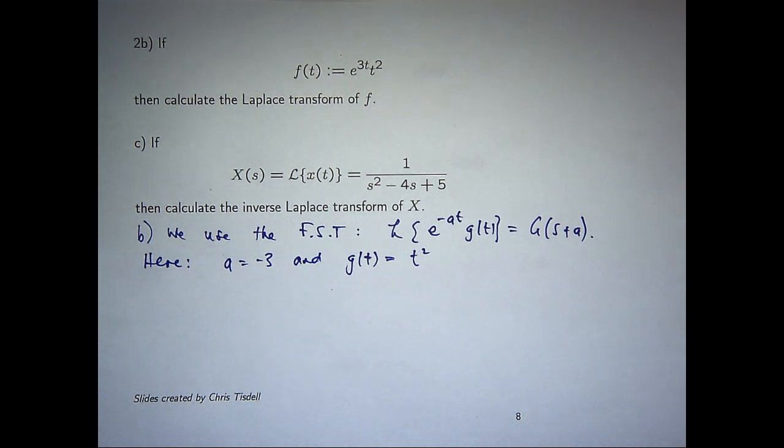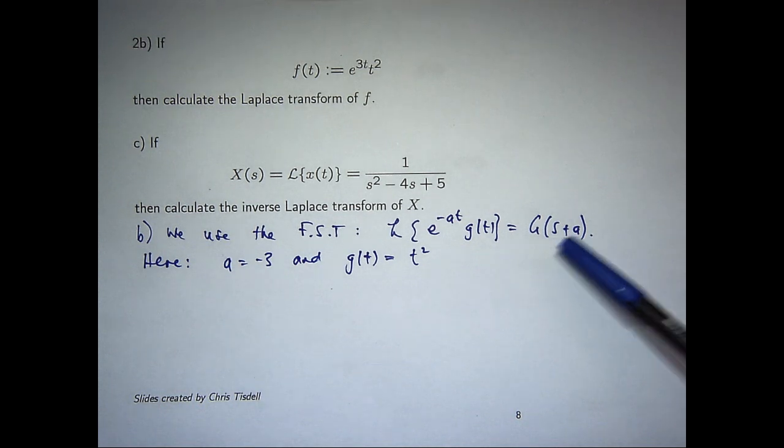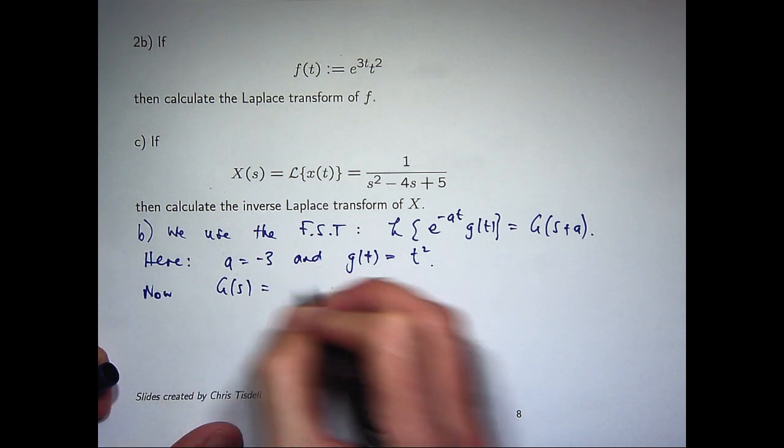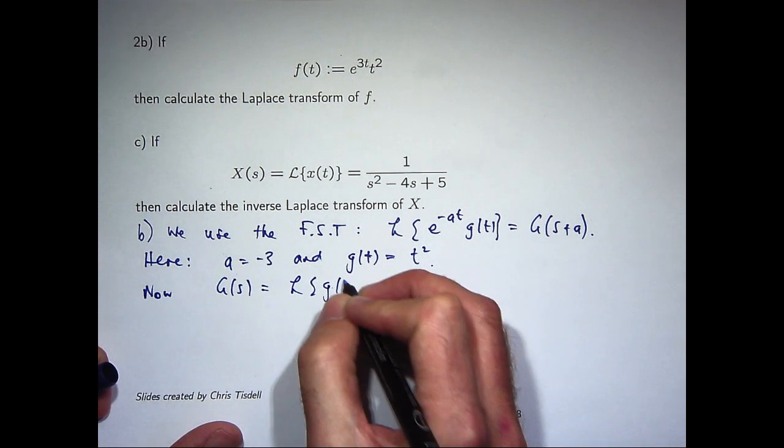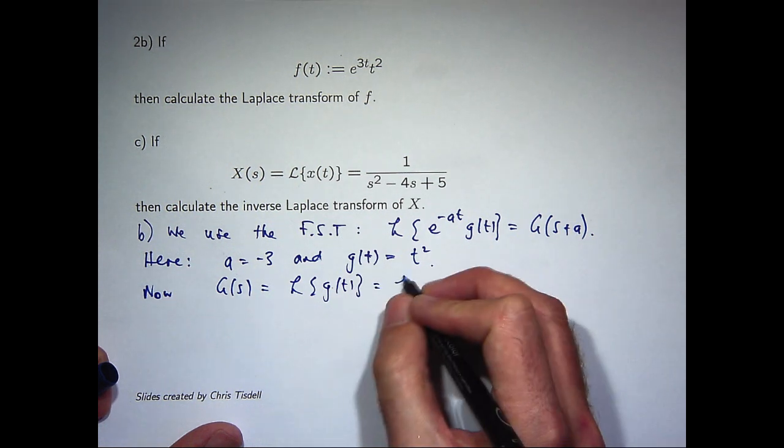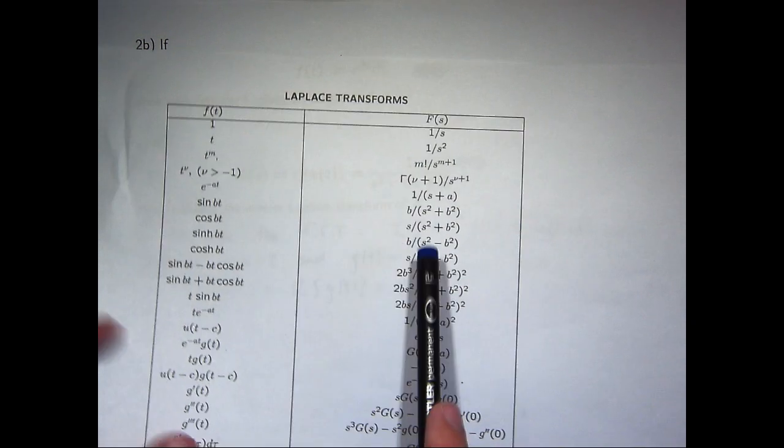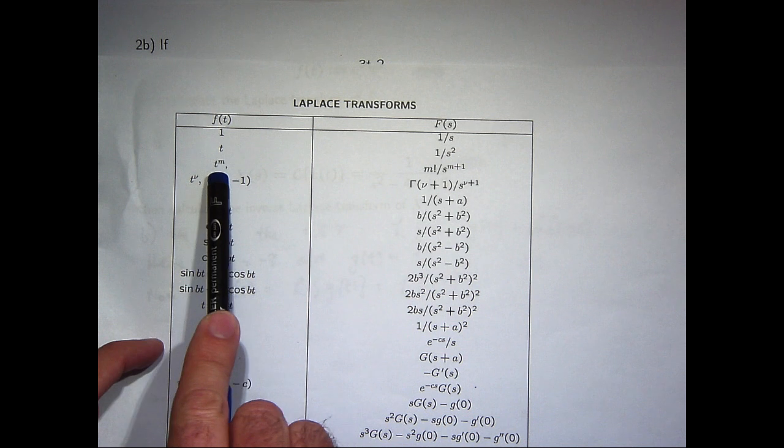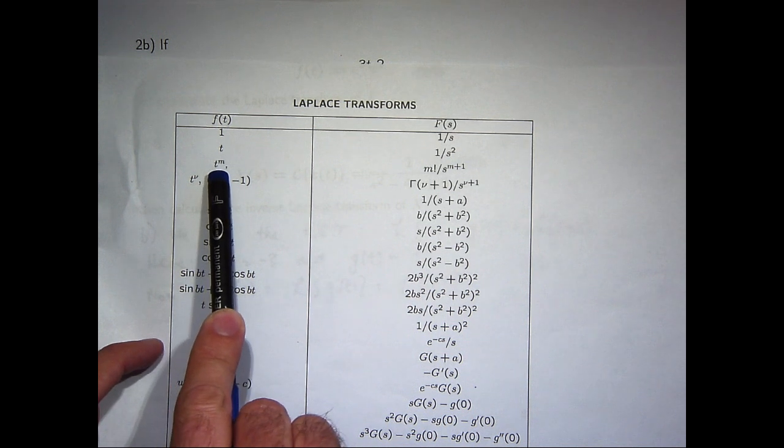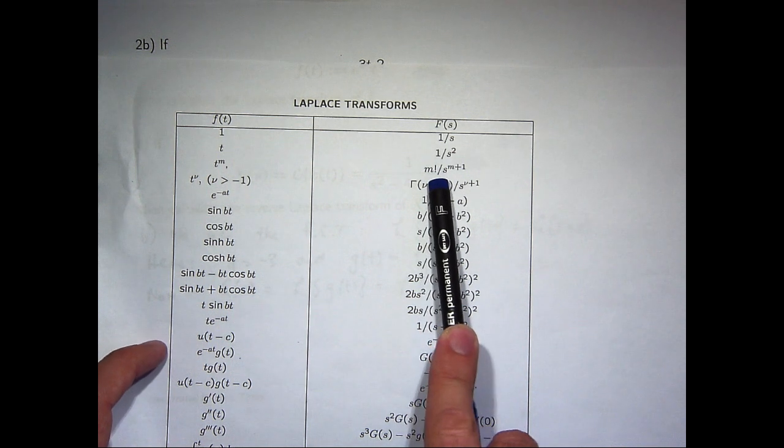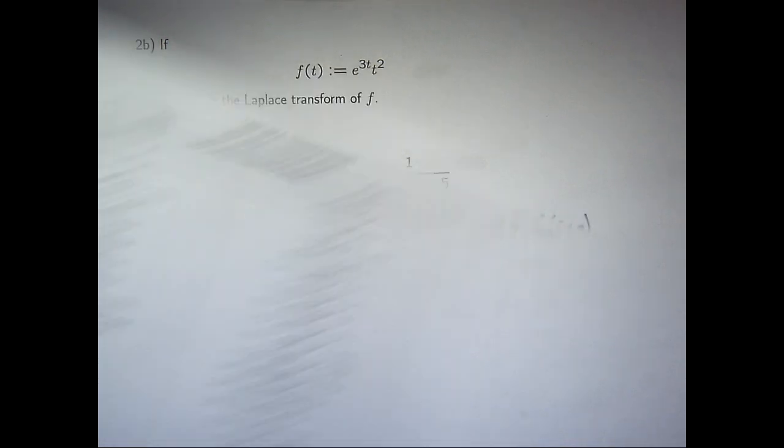So, firstly, before we form this, let's calculate big G of s. This is just the Laplace transform of little g, the Laplace transform of t squared. So, let's see if we can find the Laplace transform of t squared here. Well, if we look down here with m equals 2, we just go across and we find the transform. It's going to be 2 factorial on s to the power 3. 2 factorial is just 2.